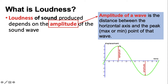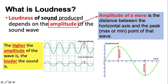So here is the amplitude of the wave. The loudness of the sound depends on this amplitude. The higher the amplitude of the wave, the louder the sound is. The lower the amplitude of the wave, the softer the sound.